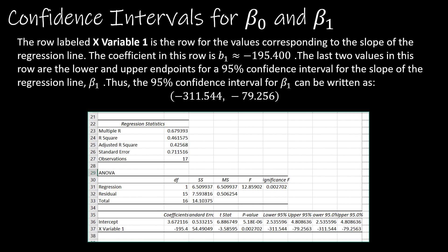Using that same process, but this time for the slope, I'm looking here at these two values, and that gives me the 95% confidence interval for the slope. So that tells us the range of values which we believe the actual slope falls between: (-311.544, -79.256).